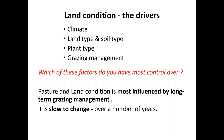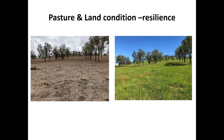The key drivers of land condition are climate, land and soil types, plant types and our grazing management — and the factor we have most control over is our long-term grazing management. Pasture and land condition is slow to change, happening over a significant number of years. Short-term disturbances due to drought or fire have a significant impact on available forage and ground cover at a particular time, but pasture and land condition does not change quickly over one or two seasons, provided those desirable 3P pasture plants have a chance to recover through strategic spelling.